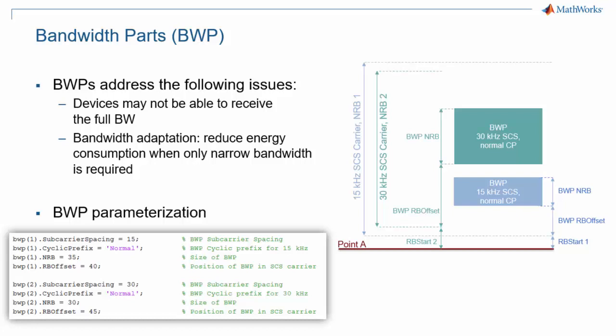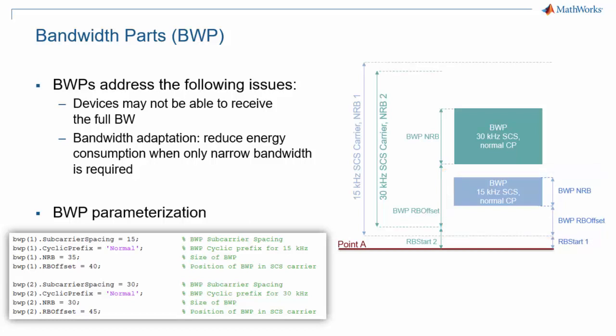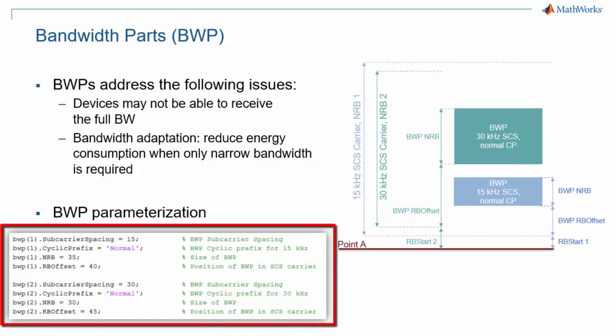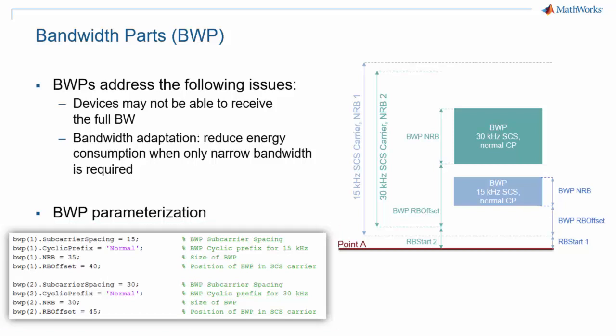Now let us look at bandwidth parts. One bandwidth part is also characterized by a subcarrier spacing, a number of resource blocks, and a starting resource. A bandwidth part is associated with a carrier that has the same subcarrier spacing, but there generally are several bandwidth parts with the same carrier spacing. Bandwidth parts address the following issues: some devices may not be able to receive the full bandwidth — remember that the bandwidth can be as large as 400 MHz. Also, even when a device is capable of receiving a larger bandwidth, it will save power if it can be addressed with a smaller bandwidth, for example because it doesn't need a high data rate at that point in time. You can easily configure a bandwidth part in MathWorks 5G Toolbox by defining the subcarrier spacing, bandwidth, and location of each bandwidth part.